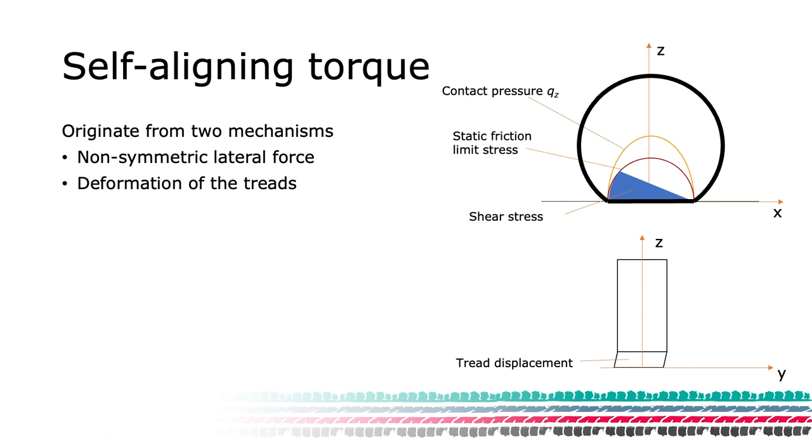We will now focus on the torque originating from the tire, and we will call this MZ. There are two basic mechanisms that generate the aligning torque. The first and the largest contributor is due to the non-symmetric distribution of shear force in the contact patch. If we look at the top figure and pay extra attention to the blue shape, this shape illustrates the magnitude of the shear force for the lateral direction.